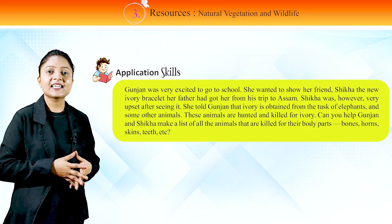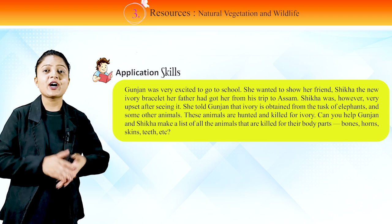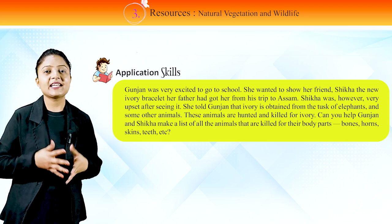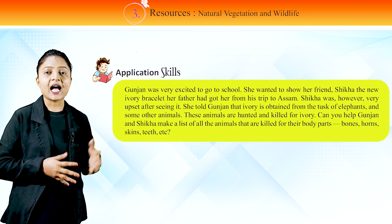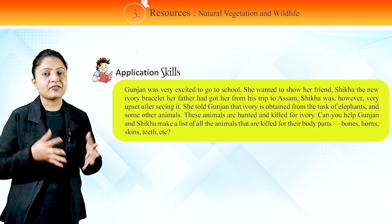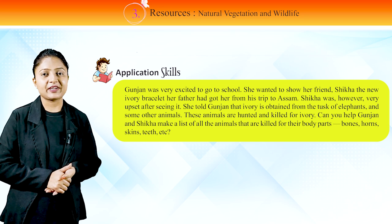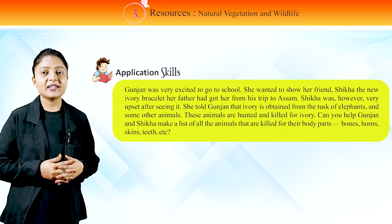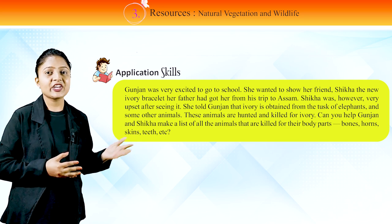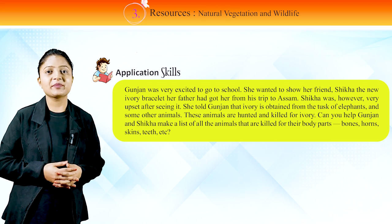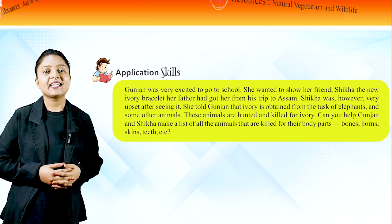Application skills: Gunjan was very excited to go to school. She wanted to show her friend Shikha the new ivory bracelet her father had got her from his trip to Assam. Shikha was however very upset after seeing it. She told Gunjan that ivory is obtained from the tusk of elephants and some other animals. These animals are hunted and killed for ivory. Can you help Gunjan and Shikha make a list of all the animals that are killed for their body parts — bones, horns, skins, teeth, etc.?